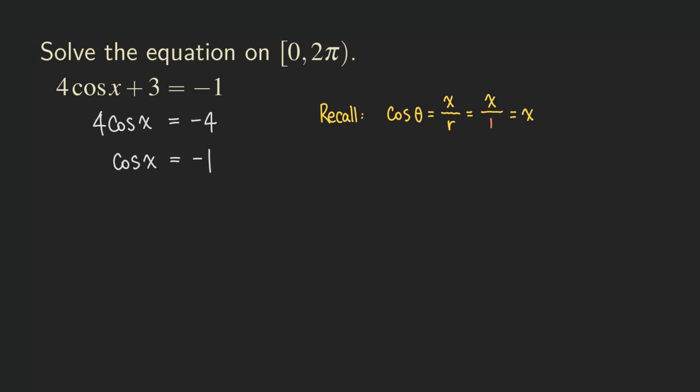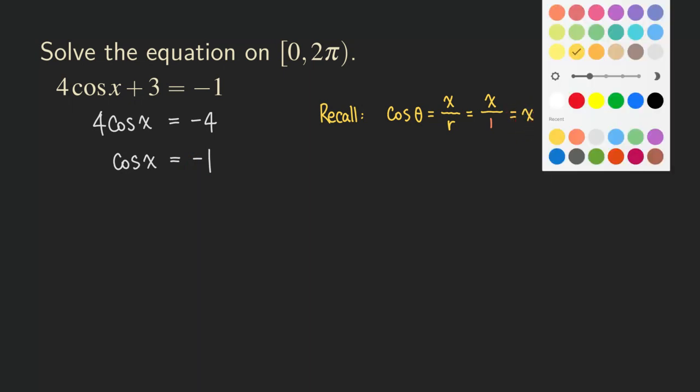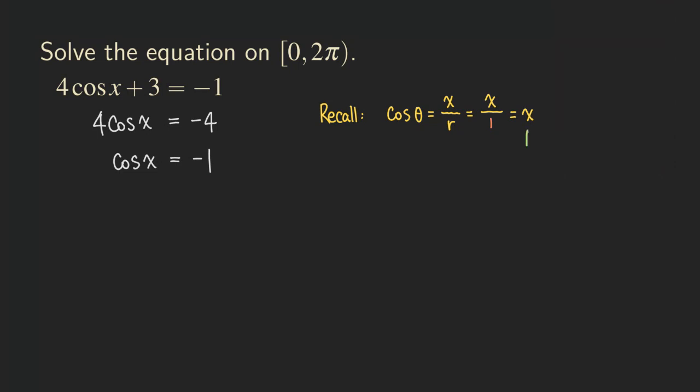Cosine is equal to the x on a unit circle. That means if cosine x is equal to negative one, then this x is equal to negative one. So x equals negative one.